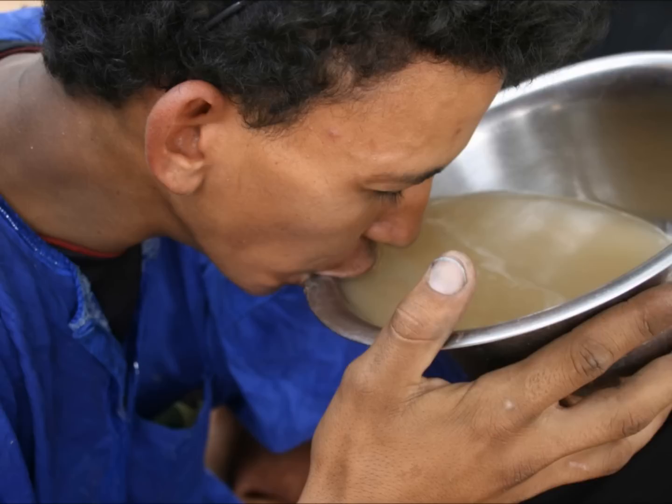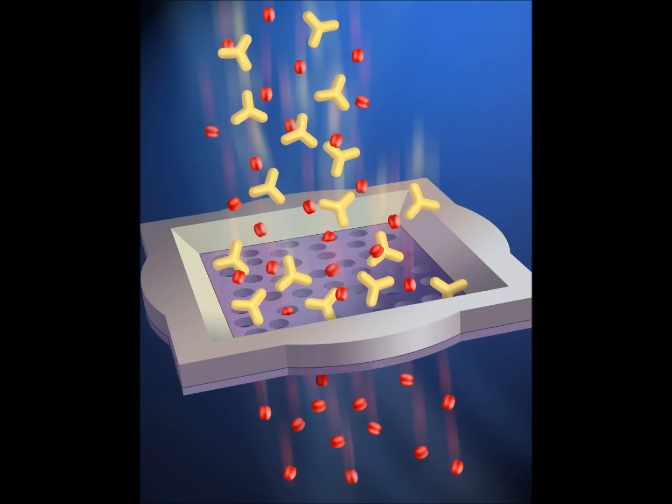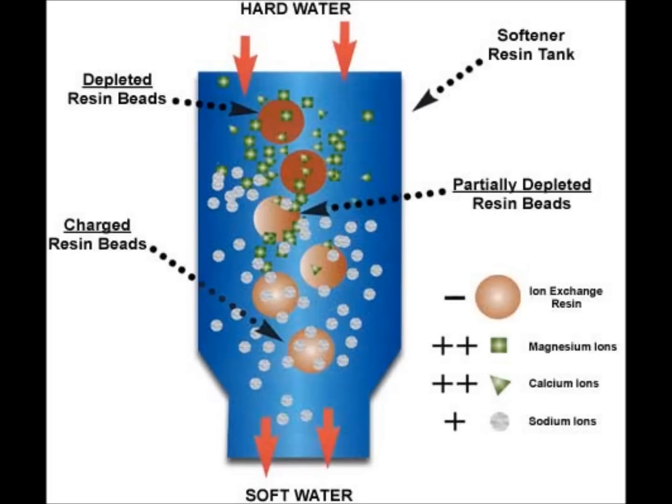What is an ion exchange system? Ion exchange, in its most basic definition, is a unit process in which ions of a certain species are exchanged or replaced with ions of a different species in solution. More specifically, ion exchange is a process that takes one type of ion, such as magnesium or calcium, which cause hardness, and replaces them with sodium to remove the hardness. This is an example of water softening done by ion exchange.